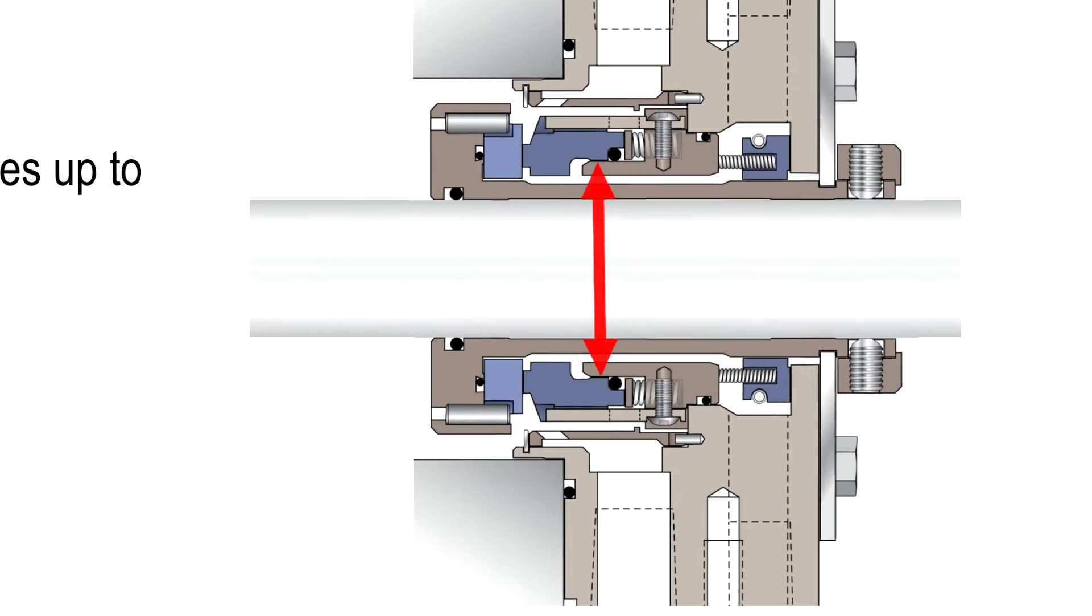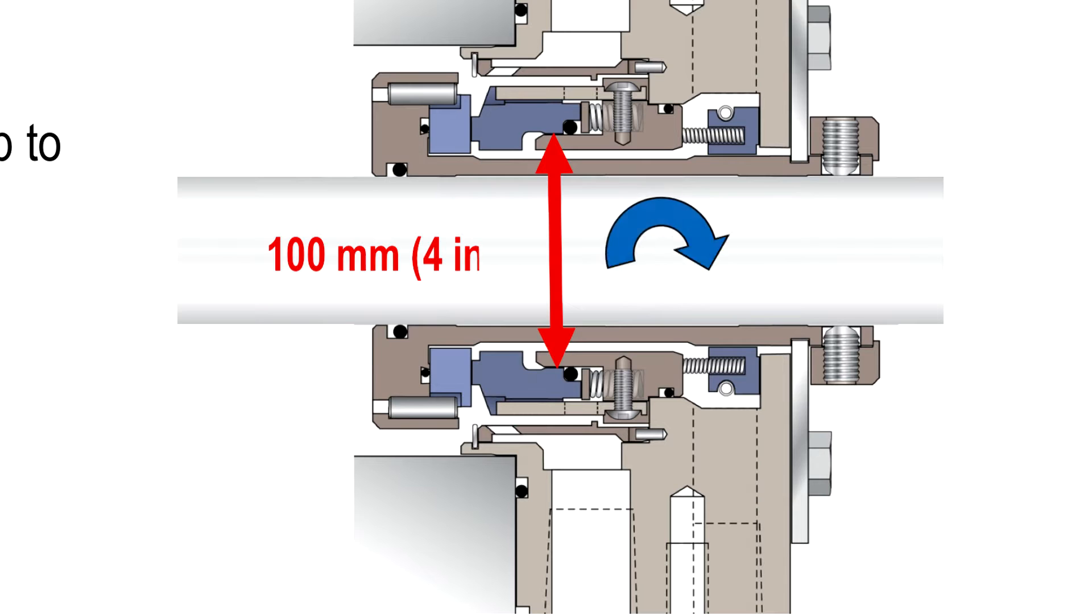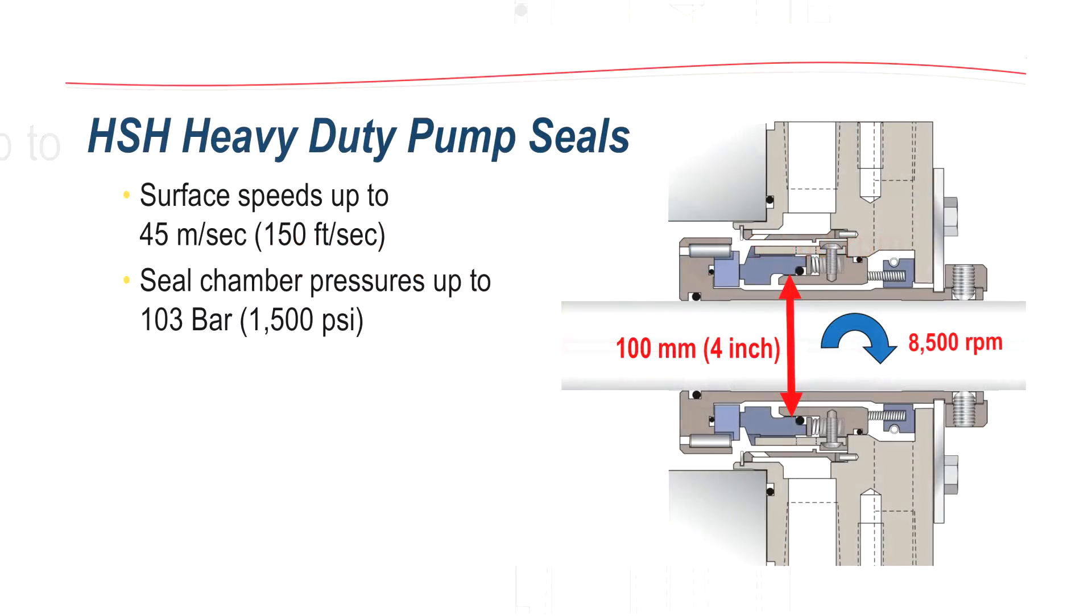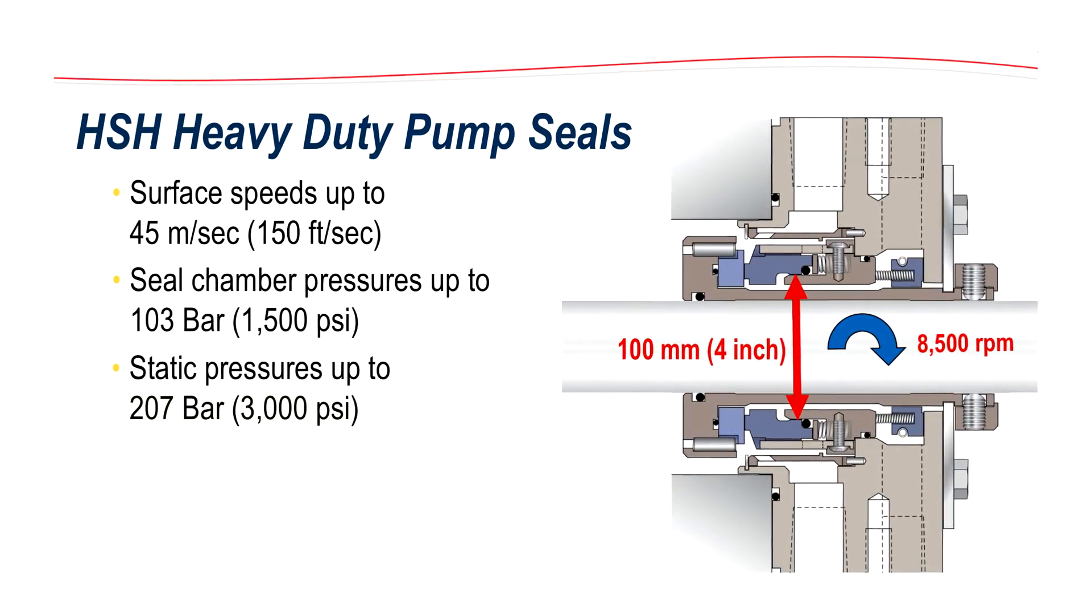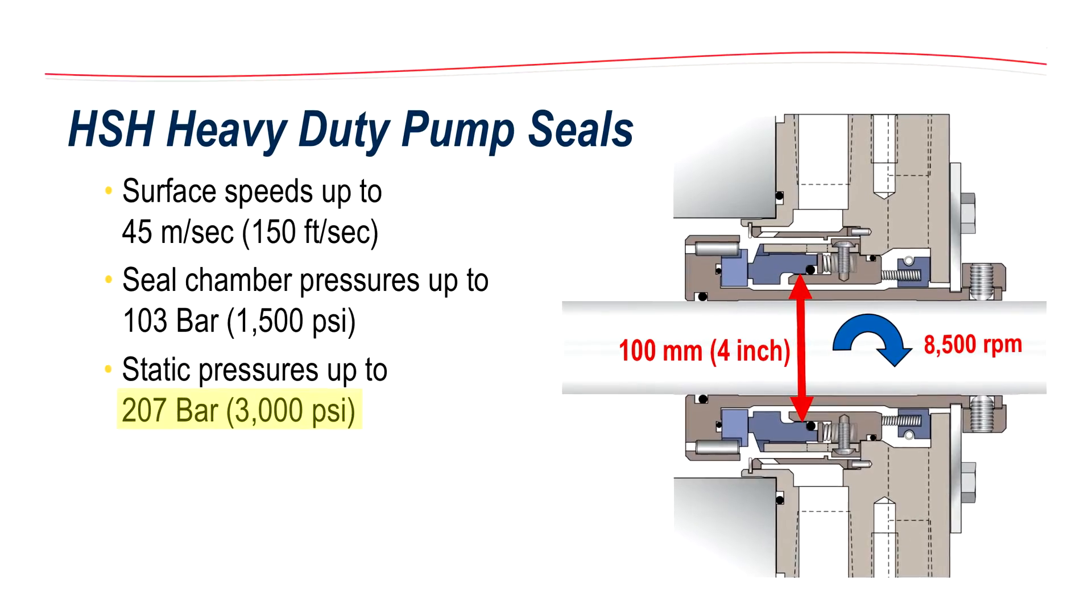For example, a 100 millimeter or 4 inch seal size could be used at speeds up to 8,500 RPM. The seal is so robustly built that it could handle static pressures up to 207 bar, 3000 PSI.